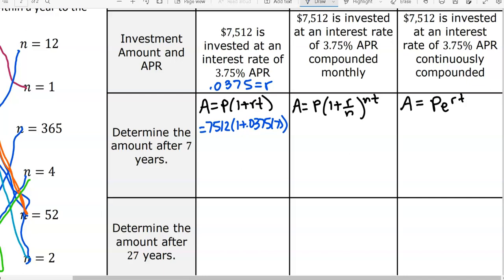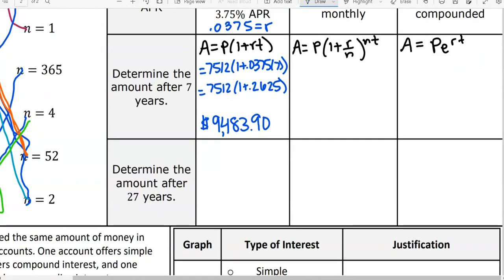What did you get? I heard 9483.90. So if you are still typing it in, don't stop. Type it in and make sure we do get the same thing. We have to multiply first. 1 plus 0.2625. Are we getting 9483.90? Yes? Okay.